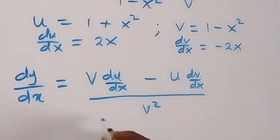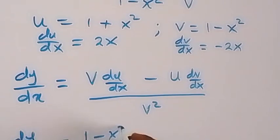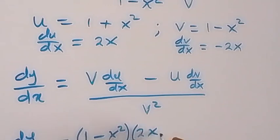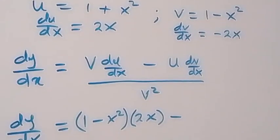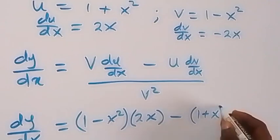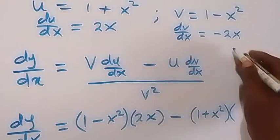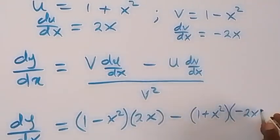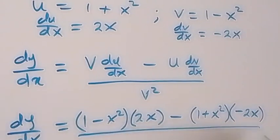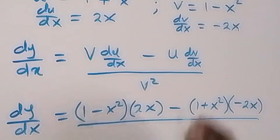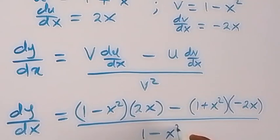Now, when we substitute into the formula, dy/dx equals v, which is (1 minus x squared), multiplied by du/dx, which is 2x, minus u, which is (1 plus x squared), multiplied by dv/dx, which is minus 2x, all divided by v squared, that is (1 minus x squared) all squared.